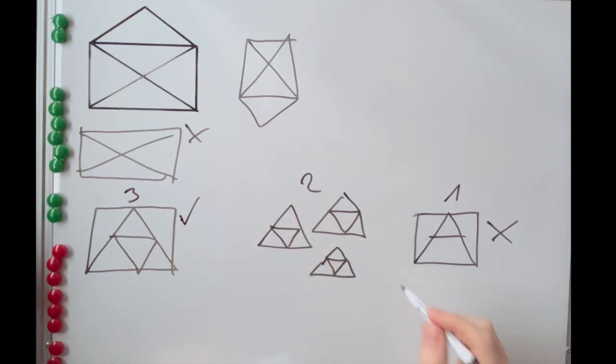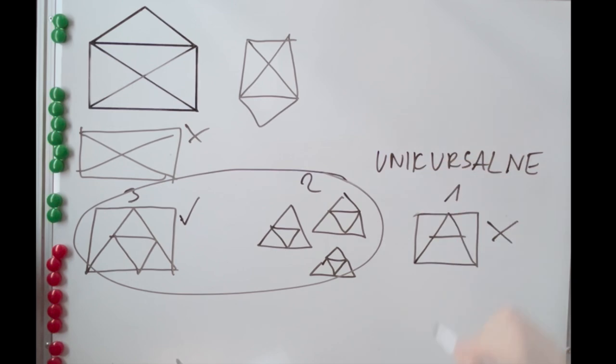The last category is the most interesting, but all shapes that can be drawn this way are called unicursal shapes. Let's dive in.